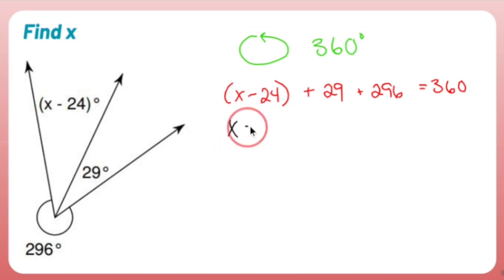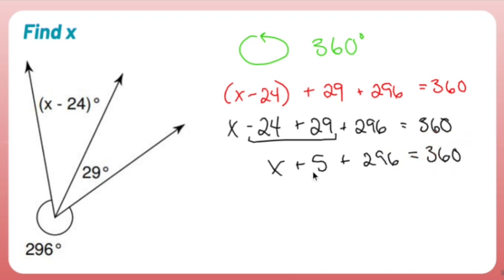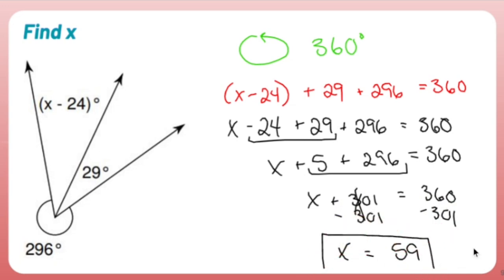So that'll help us find our X. So let's get rid of the parentheses. Don't need them. X minus 24 plus 29 plus 296 equals 360. Negative 24 and 29 make 5. So plus 296 comes along for the ride. 360 comes along for the ride. These guys combine to make 301. So 360 is still living there. I now have a one-step equation where all I have to do is subtract 301, and X equals 59. So there you have it. That is the angle addition postulate in action. Fun.